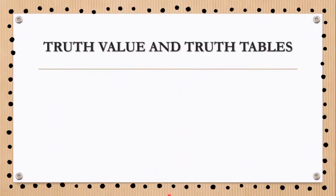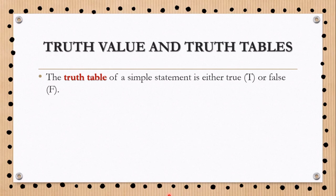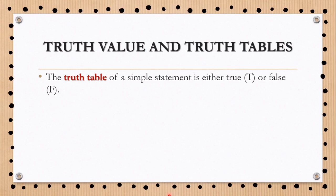The truth table of a simple statement is either true or false. True is denoted as capital letter T, while false is denoted as the capital letter F.